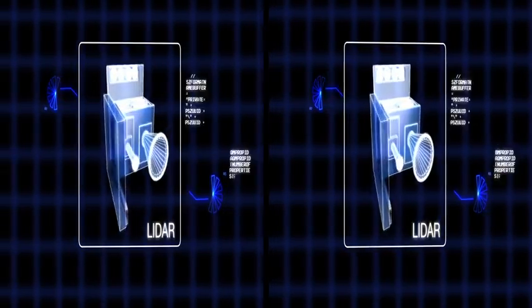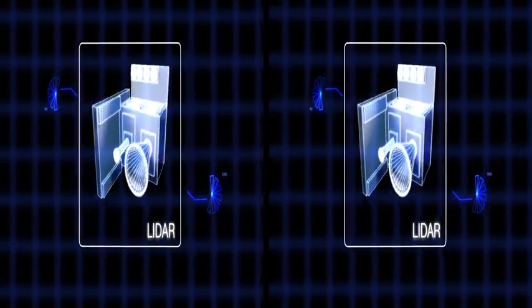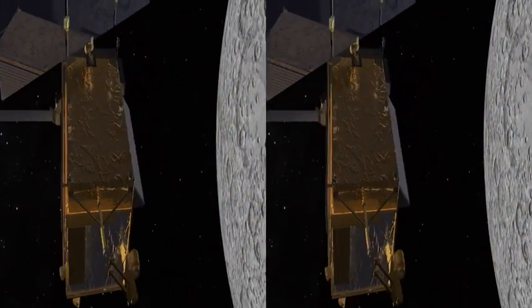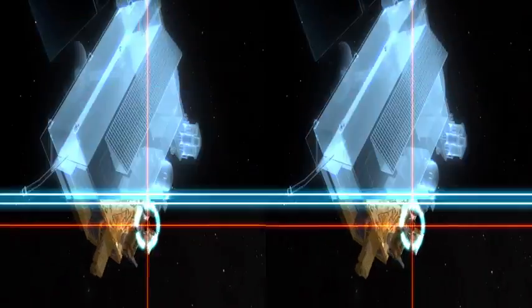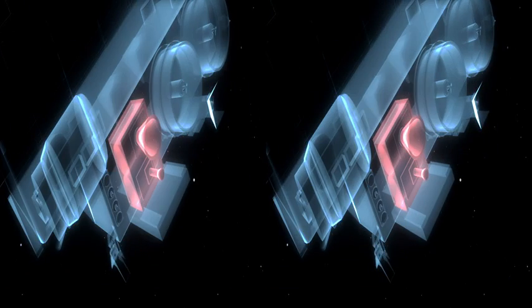To find out, NASA scientists can use a precise measuring tool called LiDAR. Mounted on a satellite orbiting high above a planet, LiDAR instruments are able to accurately measure the distance between the instrument and the landscape below using laser pulses.